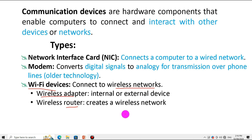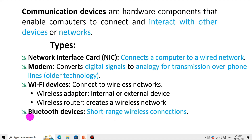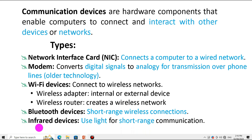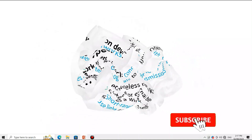A wireless router creates a wireless network. Another type of communication device is the Bluetooth device, which provides short-range wireless communication. The last type is the infrared device, which uses light for short-range communication between electronic devices or computers. Let's now summarize these communication devices into four categories.